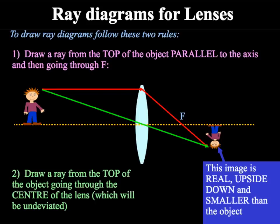In order to use our lenses to draw a full ray diagram we need to follow two rules. The first of which is that we draw a ray from the top of the object parallel to the axis to the middle of the lens and then down through the focal length.